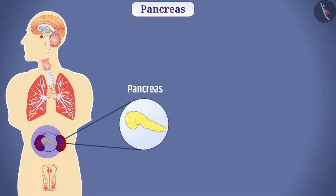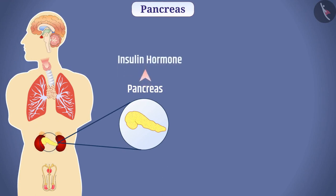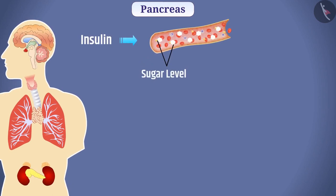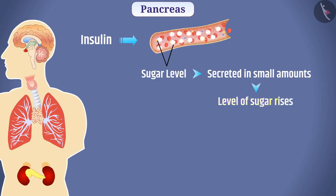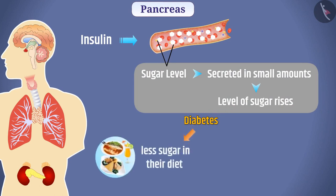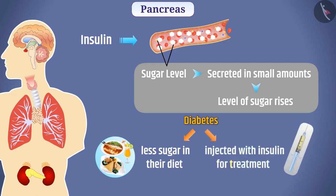The pancreas is present behind the stomach in our body. It secretes insulin hormone. Insulin helps in controlling the sugar level in the blood. If insulin is secreted in small amounts, the level of sugar in the blood rises, causing a disease called diabetes. Diabetes patients take less sugar in their diet and are injected with insulin for treatment.